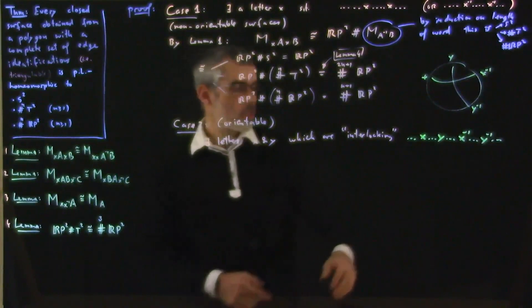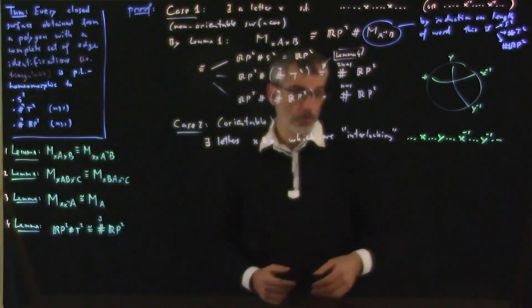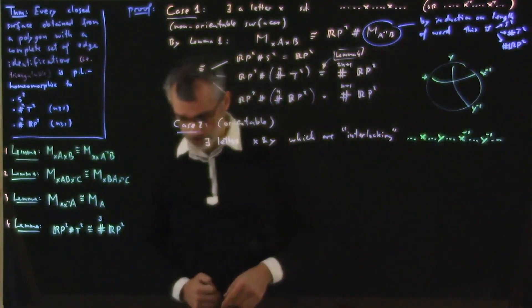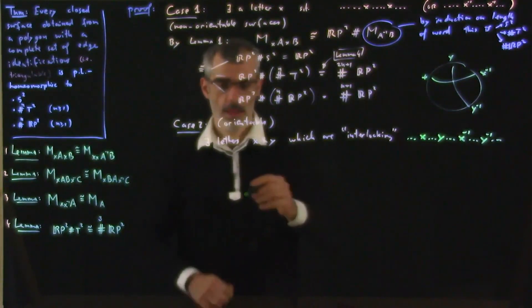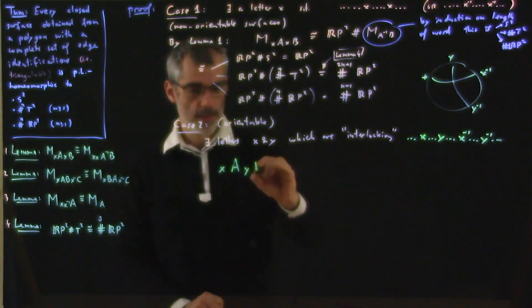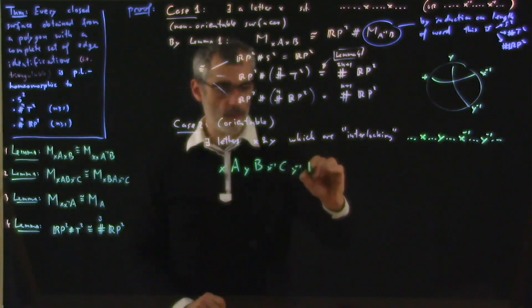Okay, so we have our word like that. And we may as well, by cyclic permutation, assume that it starts with x. So here it is. So it is x, and then A, and then y, and then some other part, and then x inverse, and then something, and then y inverse, and then something.